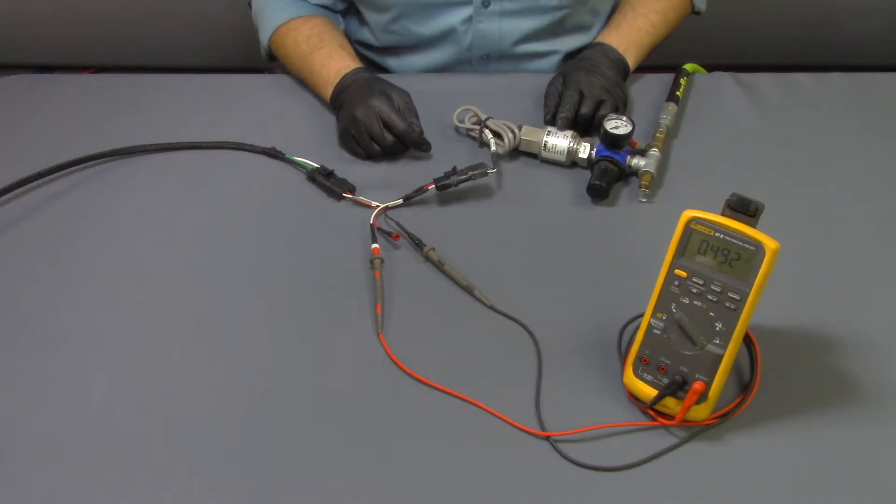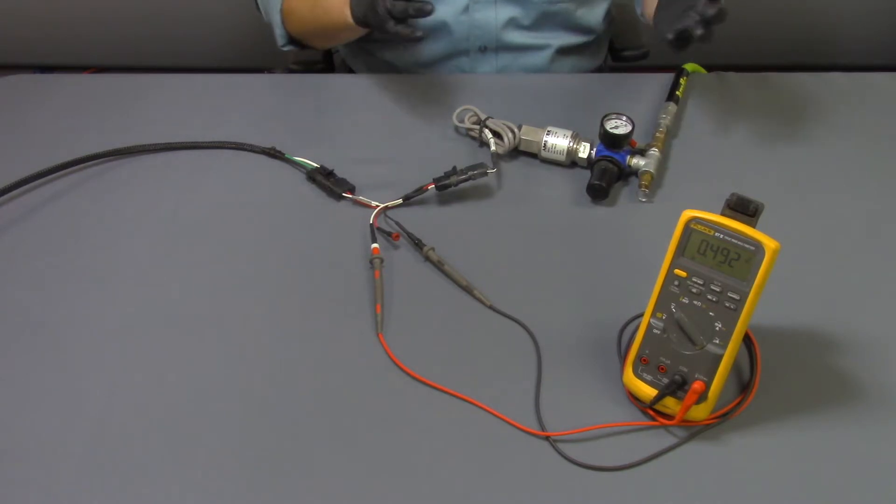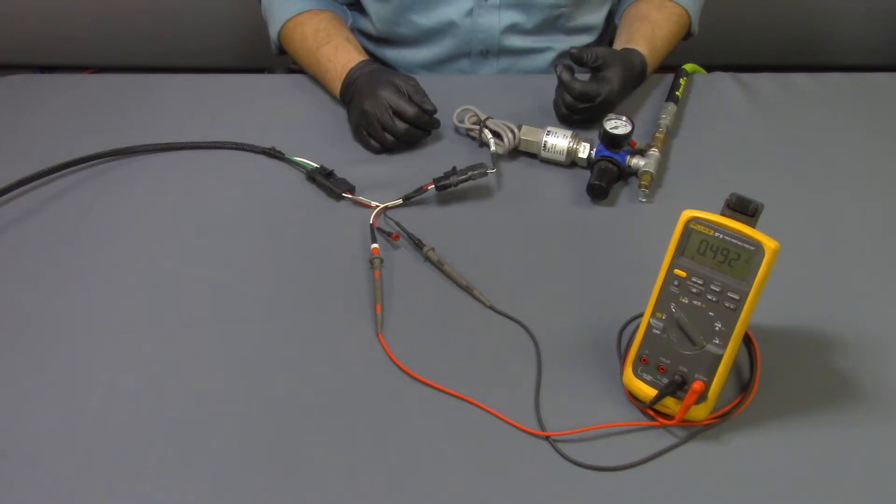Now this is a 0.5 to 5 volt pressure sensor, 0 to 100 psi. So at 0.5 volts we should be right around 0 psi. At 100 psi we'll be at 5 volts and in between that is a range between 0.5 and 5. So around 50 psi, which is halfway, we should see 2.75 volts.